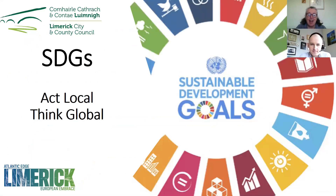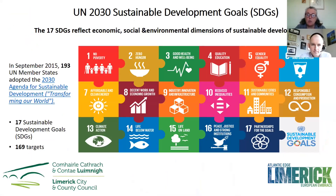The key thing with the Sustainability Development Goals is to act locally and think globally. They apply everywhere — not just to developing countries, they apply to all of us. There are 17 goals reflecting economic, social and environmental dimensions of sustainable development. 193 member states have signed up, and there are 169 targets.